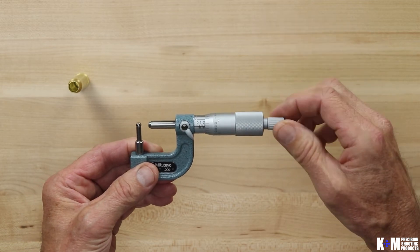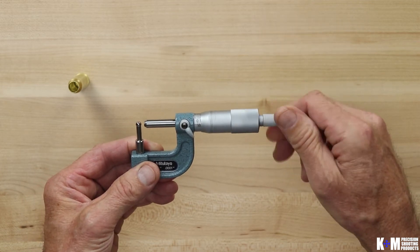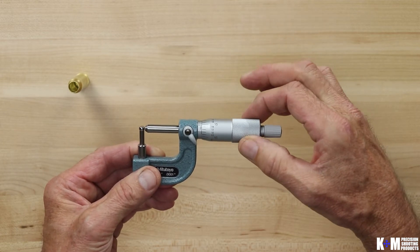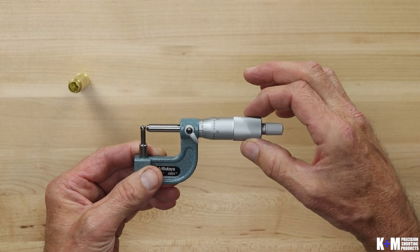Many micrometers will have a little clutch in them, typically referred to as a ratchet. This one is out on the end. Sometimes that is built into the spindle itself.